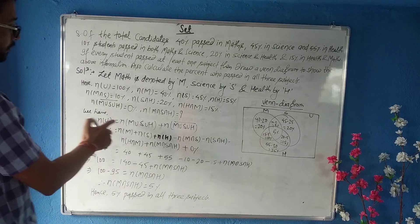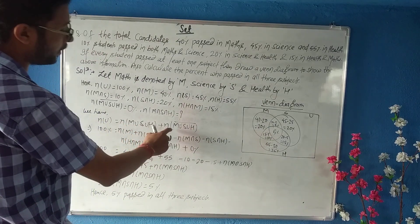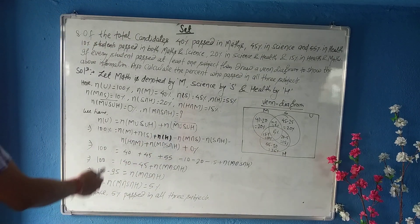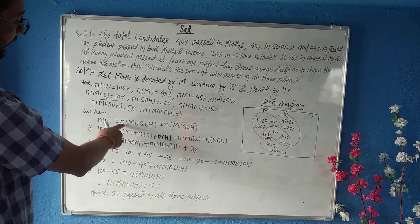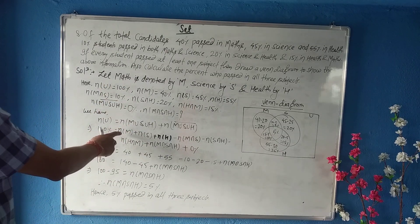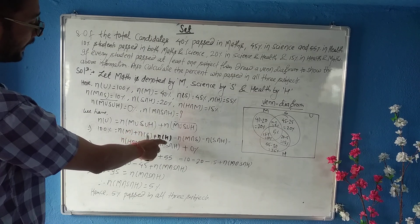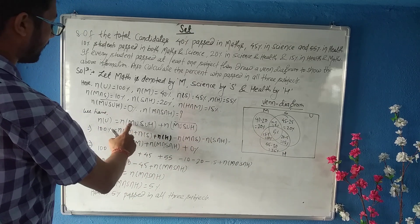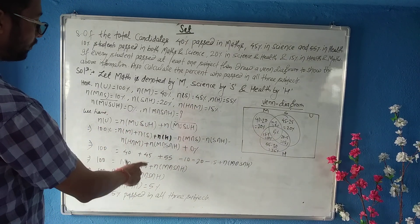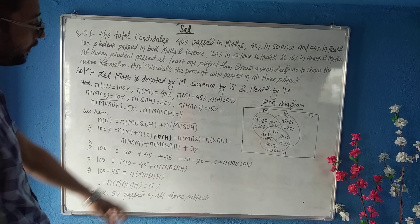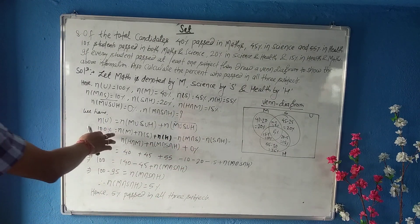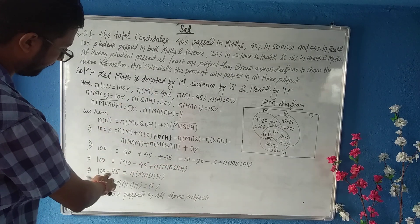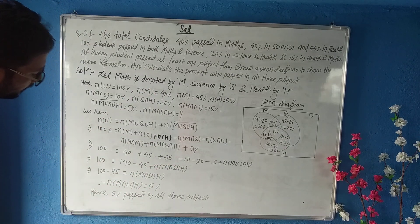n(U) = n(M∪S∪H) + n(M∪S∪H)'. The formula for n(M∪S∪H) = n(M) + n(S) + n(H) − n(M∩S) − n(S∩H) − n(H∩M) + n(M∩S∩H). Since complement is zero, n(U) = n(M∪S∪H). Substituting: 100 = 40 + 45 + 25 − 10 − 20 − 15 + n(M∩S∩H). After solving we get 5%, so 5% passed in all three subjects.